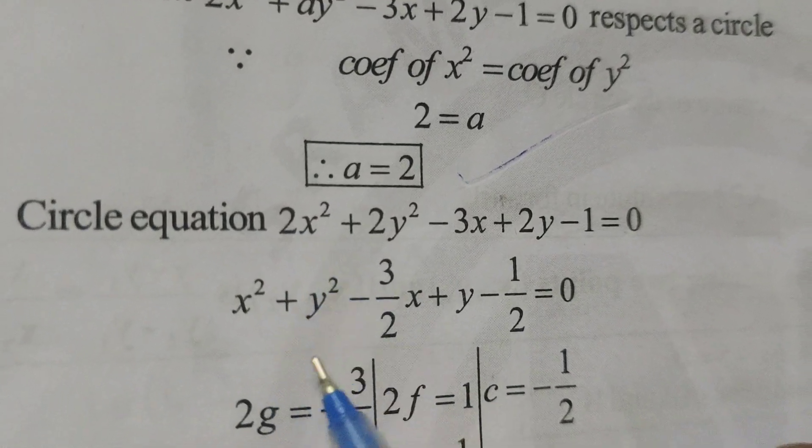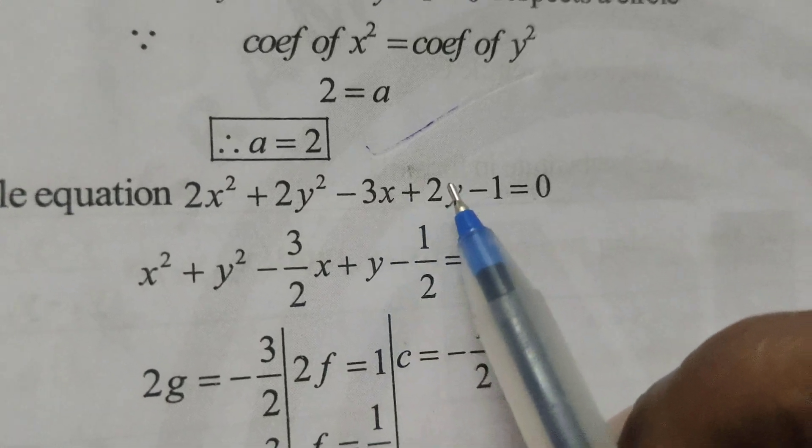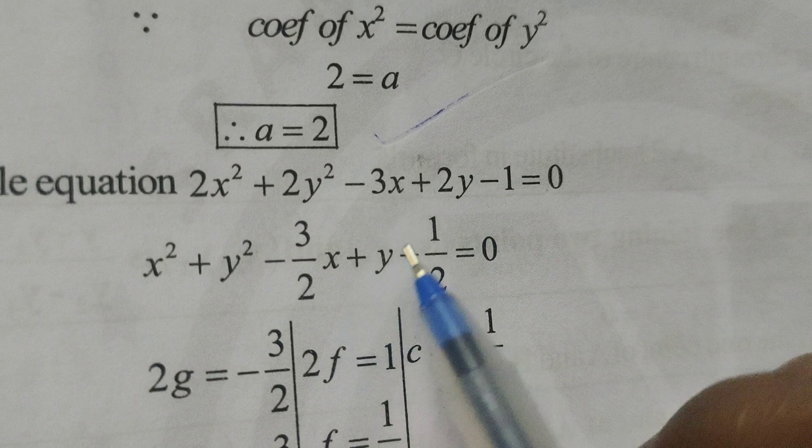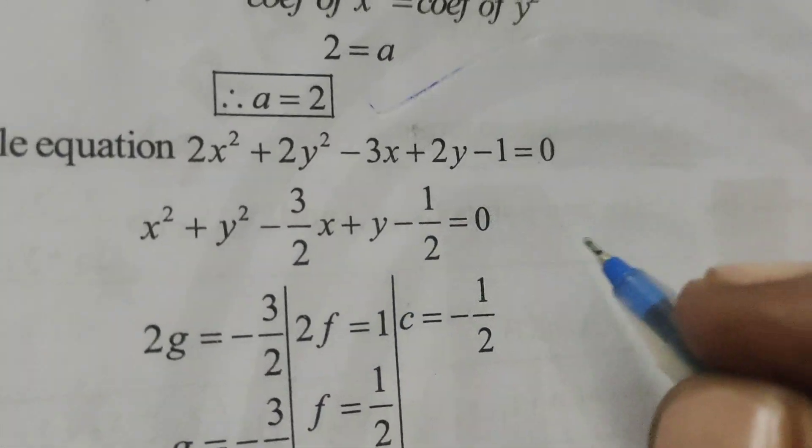Next x square plus y square minus 3 by 2 into x plus, 2 by 2 it cancels, only y is there, minus 1 by 2 equals to 0.